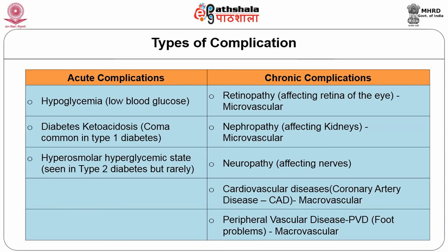Acute complications have immediate onset. The most important are hypoglycemia — meaning low blood glucose — and diabetic ketoacidosis, a coma-like state especially seen in young children admitted with very high blood sugar and dehydration. There is also hyperglycemic hyperosmolar state, seen rarely in type 2 diabetics.